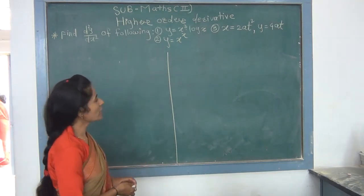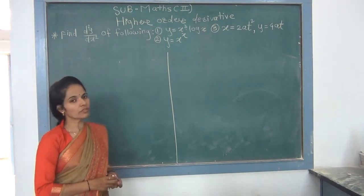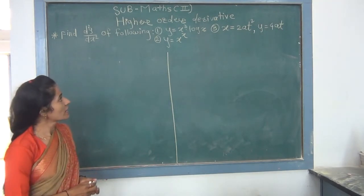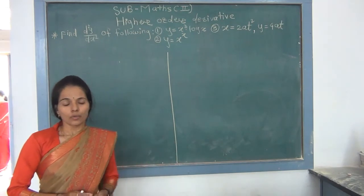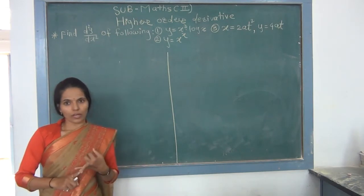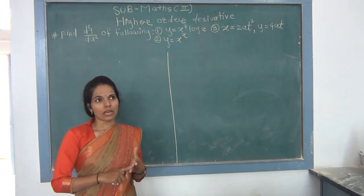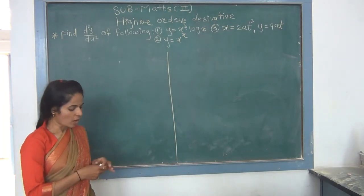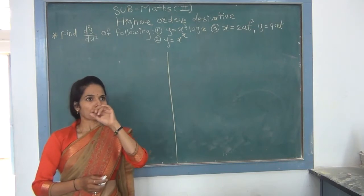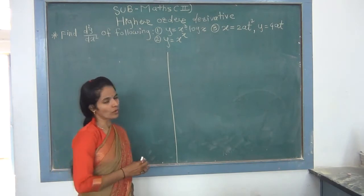We start our last topic of the derivative chapter of class 12: higher order derivatives. Out of this chapter, we have completed derivative of composite function, logarithmic differentiation, parametric derivative, derivative of implicit function, and derivative of inverse trigonometric function. Now the last topic is higher order derivative. Let us first discuss what is meant by higher order derivative.